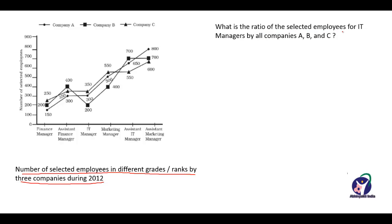The first question is: what is the ratio of the selected employees for IT managers by all the companies A, B, and C? This is the sign for company A, this is the sign for company B, and this is the sign for company C. For IT managers, the employees working in companies A, C, and B are 300, 200, and 350 respectively.